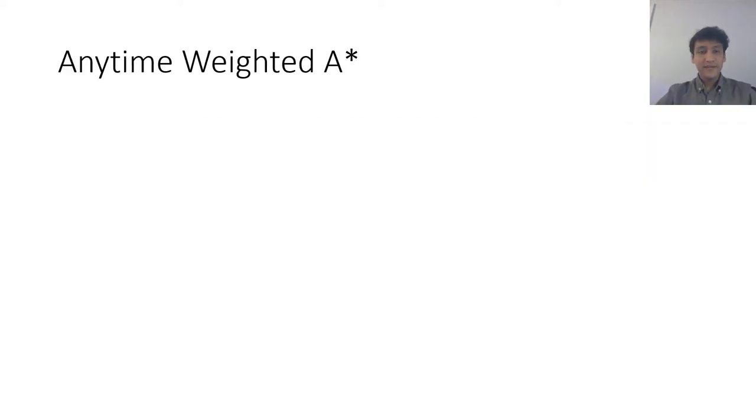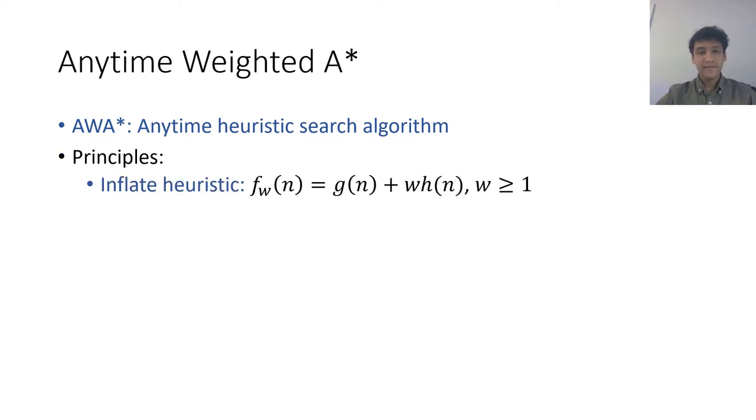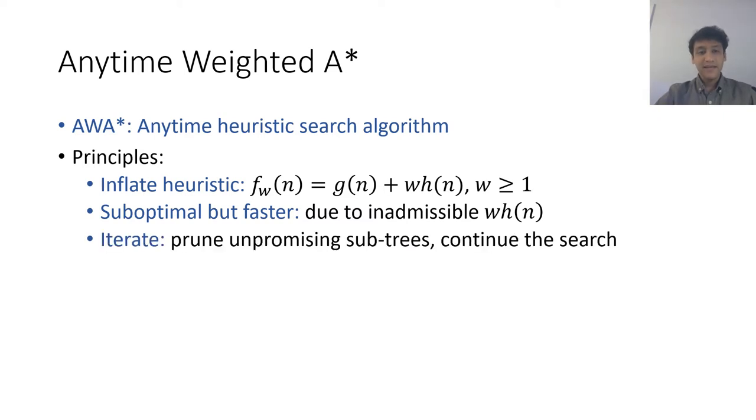Now let us quickly review Anytime Weighted A star or AWA star which is an Anytime version of the heuristic search algorithm A star. It is based on the following design principles. First, the heuristic is multiplied by a weight greater than 1. As a result, the weighted heuristic might become inadmissible leading to a sub-optimal solution but which is found faster. Then the algorithm continues the search by pruning those sub-trees that cannot lead to a better solution than the latest solution. Ultimately, the optimal solution is guaranteed.